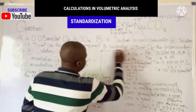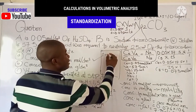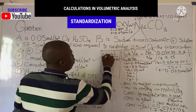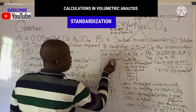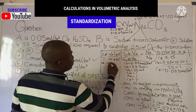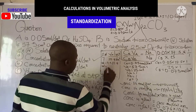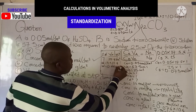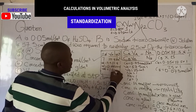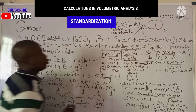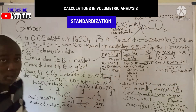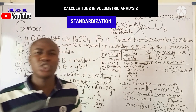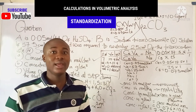At STP, moles equals volume divided by 22.4 dm³. Rearranging, volume equals moles × 22.4, so volume of CO₂ equals 0.075 × 22.4, which gives 1.68 dm³. That's how titration and stoichiometry problems are solved. Please subscribe to the channel and share these videos. Thanks for watching.